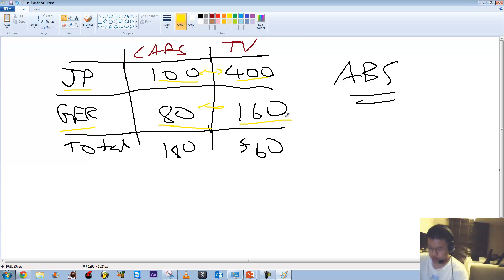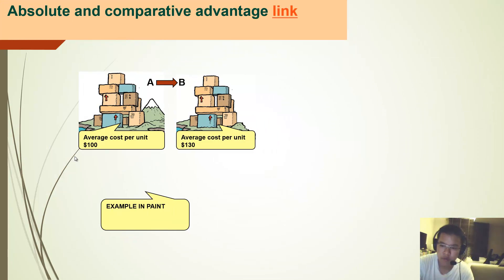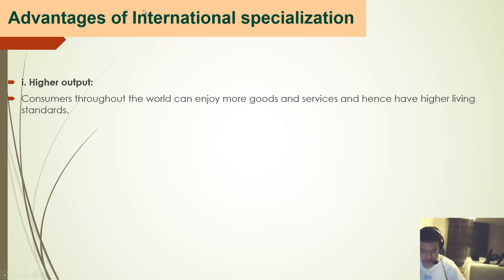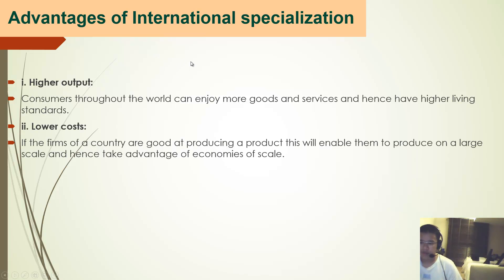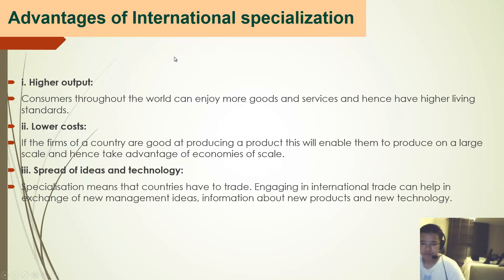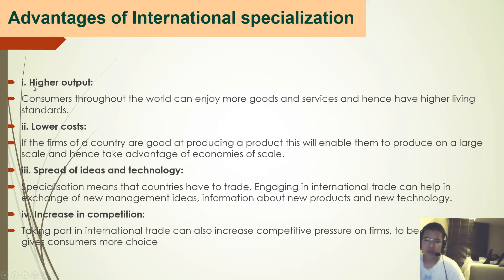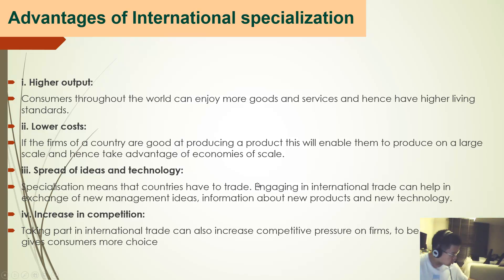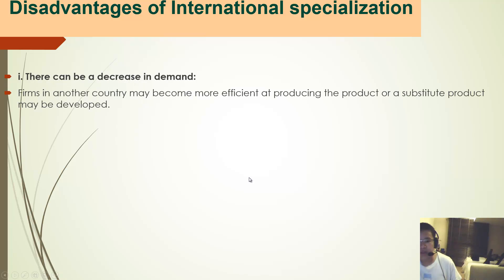So that covers absolute and comparative advantage. There are some advantages of international specialization — we should know this from Topic 1 on division of labor. The straightforward ones are higher output and lower cost. Applied to international specialization, it means countries have to trade. Engaging in international trade can help exchange new management ideas, information about new products, and new technology. Taking part in international trade also increases competitive pressure on firms to be efficient and gives consumers more choice.